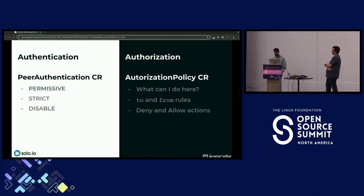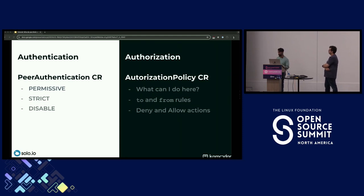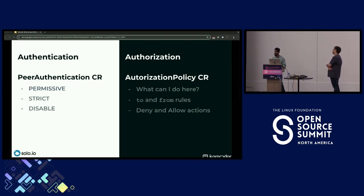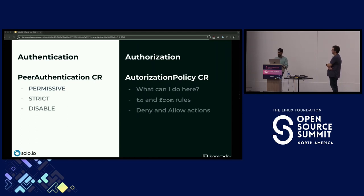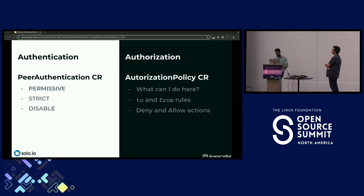We can also disable peer authentication entirely so there's no requirement for certificates or mTLS at all. Once authentication is established, there's an element of authorization — what can services do once they've communicated? Think of it like getting through a front door: authorization decides what rooms you can enter, what actions you can take. At the HTTP level, it controls what kinds of requests — PUT, GET, DELETE — services can make across other services.